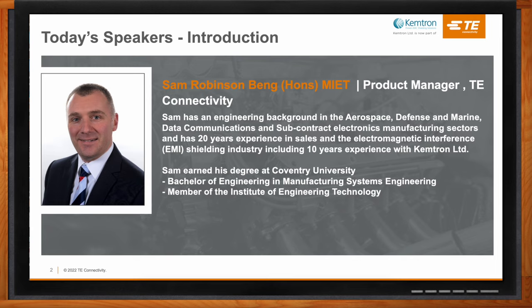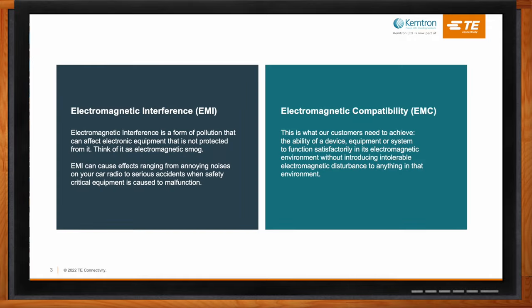Sam, as a primer for today's discussion, can you explain the difference between EMI, electromagnetic interference, and EMC, electromagnetic compatibility? Electromagnetic interference can be thought of as a form of pollution that can affect electronic equipment that's not protected from it — you can think of it as an electromagnetic smog. EMI can cause effects ranging from annoying noises on your car radio all the way up to the failure of a safety-critical system. Electromagnetic compatibility, EMC, is what our customers need to achieve — the ability of a device, equipment, or system to function satisfactorily in its electromagnetic environment without introducing electromagnetic disturbance to anything else in that environment.